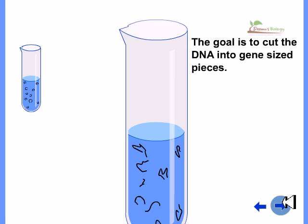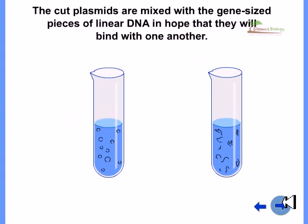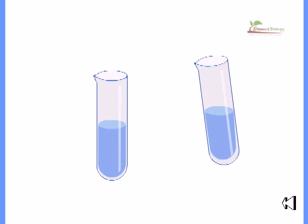The goal is to cut the DNA into gene-sized pieces. The cut plasmids are mixed with the gene-sized pieces of linear DNA in hope that they will bind with each other with the help of their sticky ends.